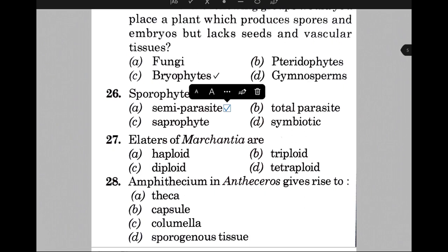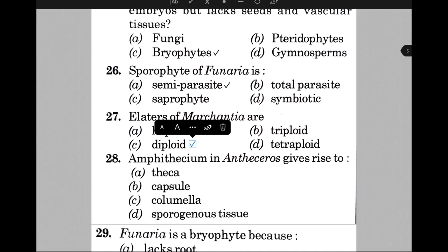Sporophyte of Funaria is semi-parasitic because the sporophytic phase is dependent on the gametophytic phase. Elaters of Marchantia are — that is C, they are diploid, because elater is a part of the sporophyte. Amphithecium in Anthoceros gives rise to — the answer is option D, that is cortical tissue.